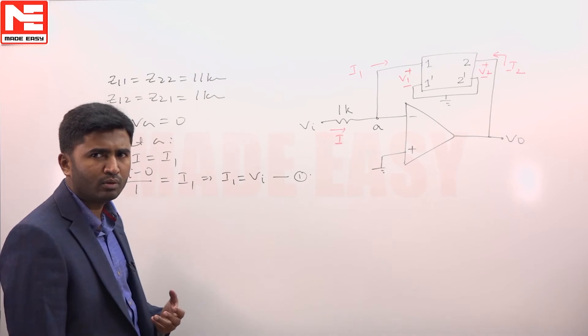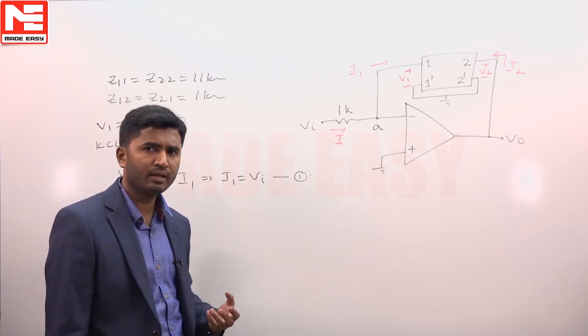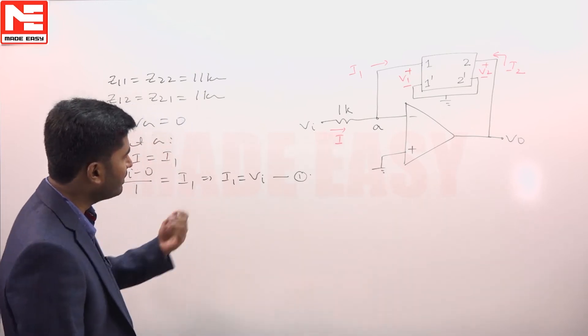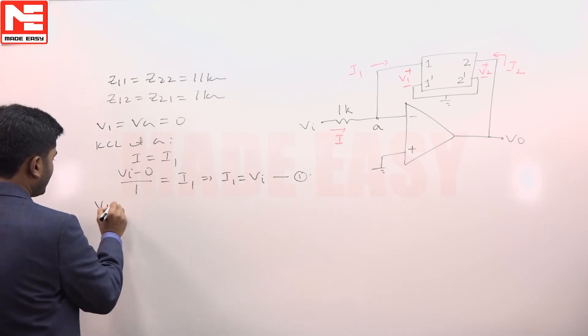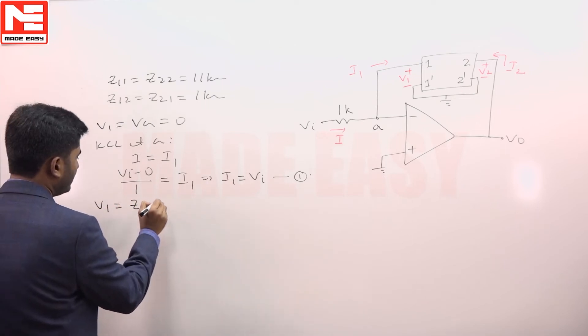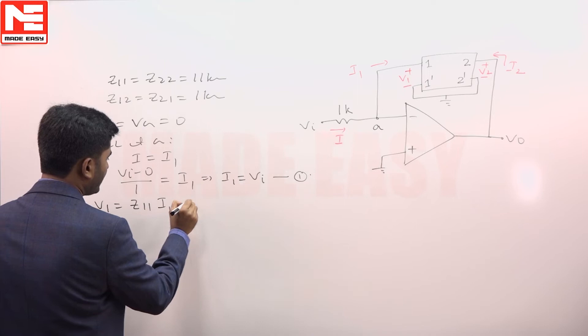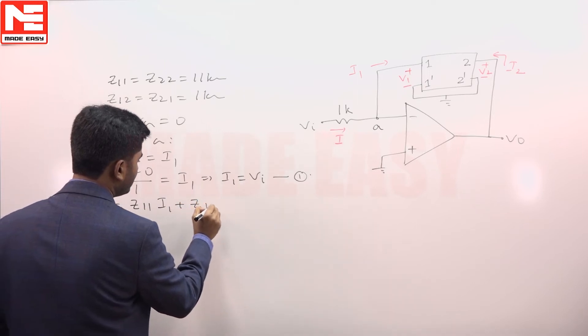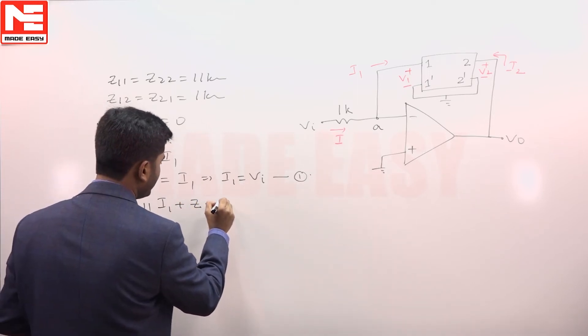And then we know z parameter equations. In z parameters, V 1 can be written as z 1 1 into i1 plus z 1 2 into i2.